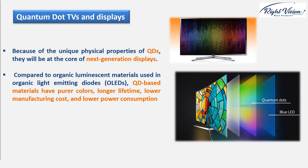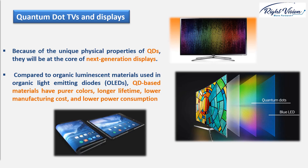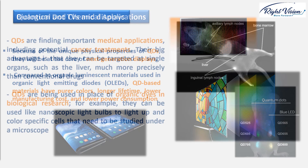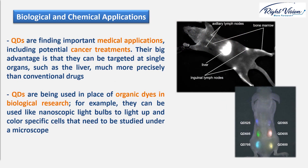Compared to the organic luminescent materials used in organic light-emitting diodes (OLEDs), quantum dot-based materials have purer color, longer lifetime, lower manufacturing costs, and lower power consumption. Another key advantage is that quantum dots can be deposited on virtually any substrate — so you can expect printable, flexible, and even rollable quantum dot displays of all sizes.